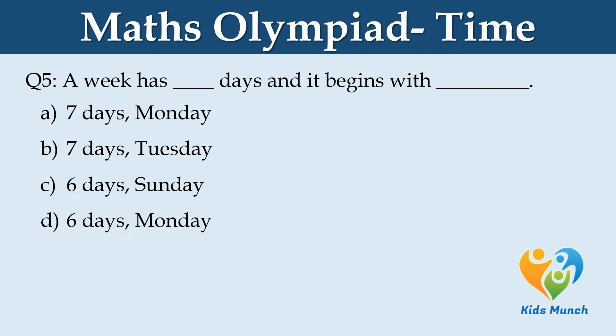A week has dash days and it begins with dash. Option A: seven days, Monday. Option B: seven days, Tuesday. Option C: seven days, Sunday. Option D: six days, Monday.